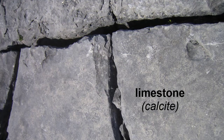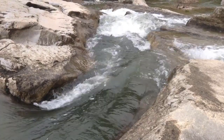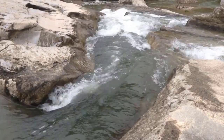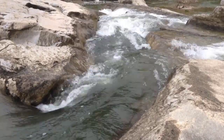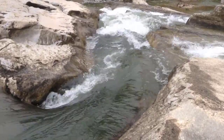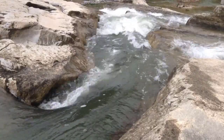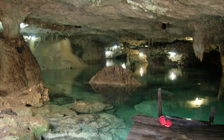Limestone has no pore space, as it's made of inner-grown crystals, but it does form cracks. Water makes its way down those cracks and sits in them, slowly dissolving the calcite over time and making the cracks bigger and bigger. After tens of thousands of years, these cracks can turn into giant caverns and tunnels filled with water.